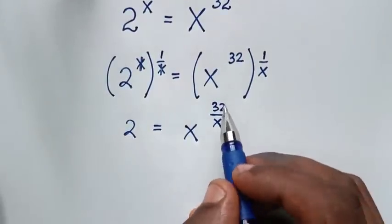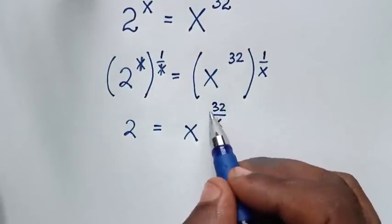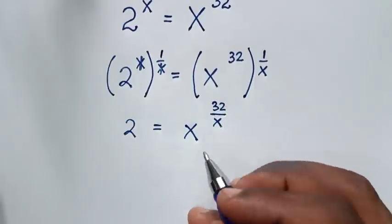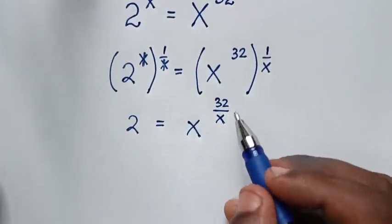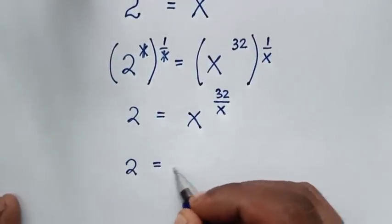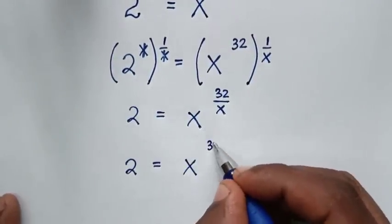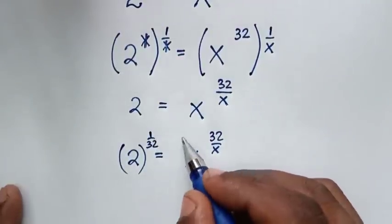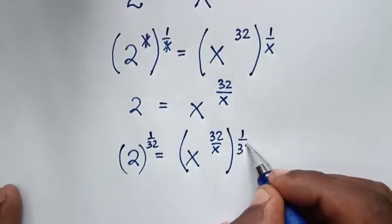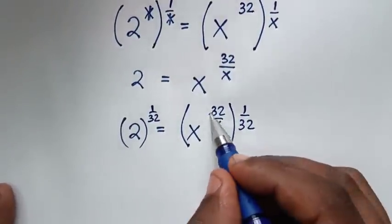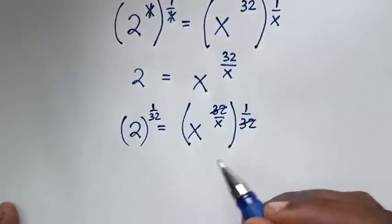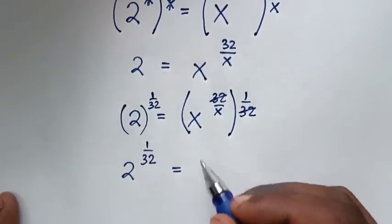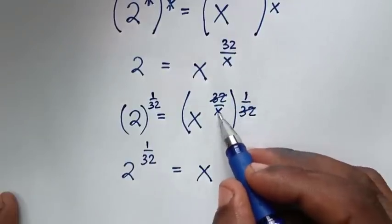In the next step, we remove the 32 in the numerator of the power by raising both sides to the power of 1 over 32. This cancels the 32, giving 2 power of 1 over 32 is equal to x power of 1 over x.